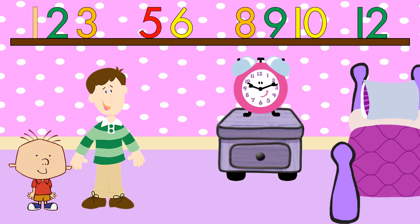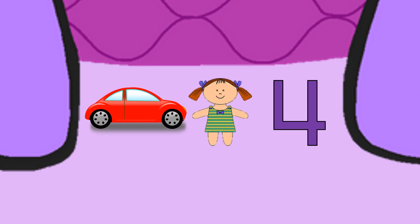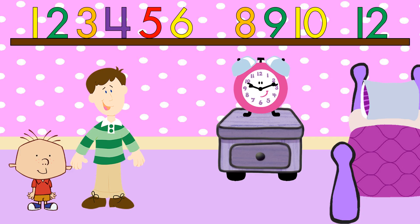One, two, three. Uh-oh, there's a number missing. What number comes after three? Four! Right. I think I'll check under the bed. I see some stuff under the bed. Do you see the number four? Right there! There's the number four. Come here, number four. There you go.